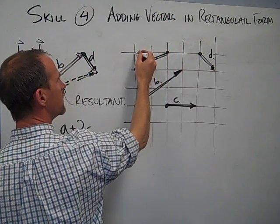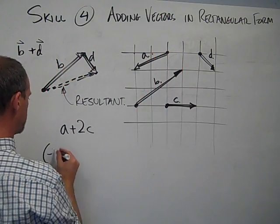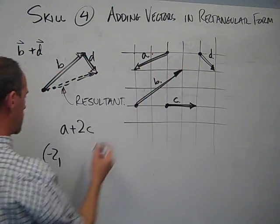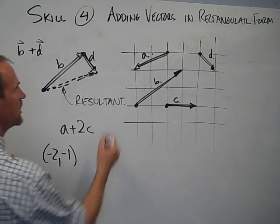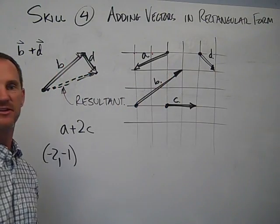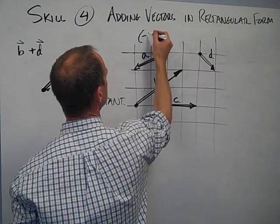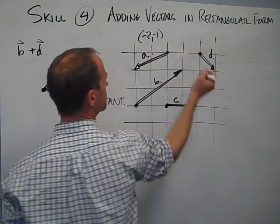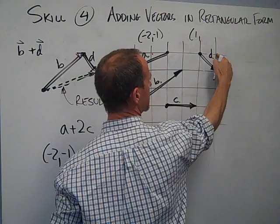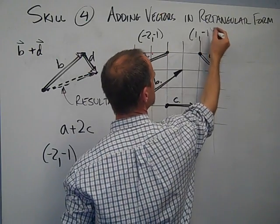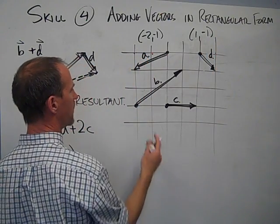So I'm going back 2, and that's minus 2, and then I'm going down 1, so it's minus 1. So if I say convert that vector into rectangular form, you'd write minus 2, minus 1. This one would be positive 1 for my x direction, and then always the second number is your y value, negative 1.